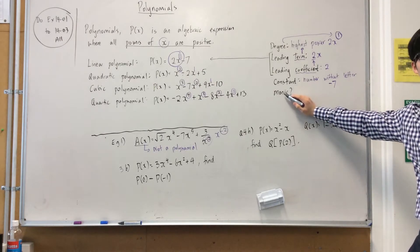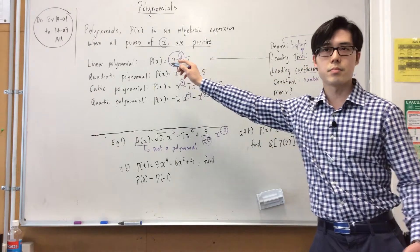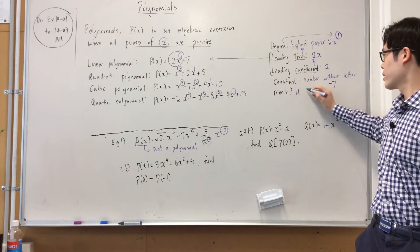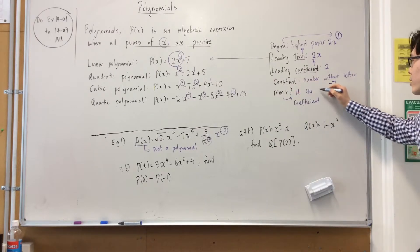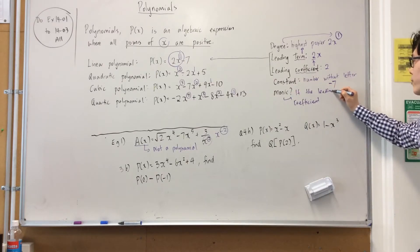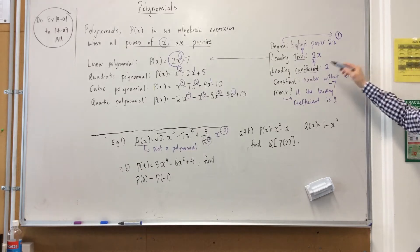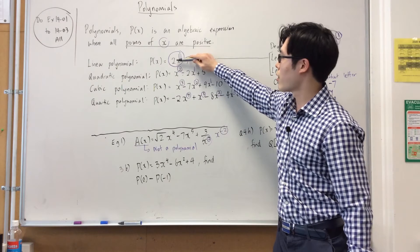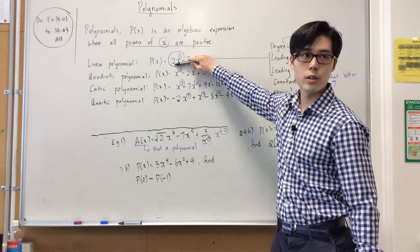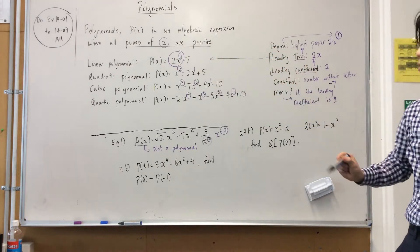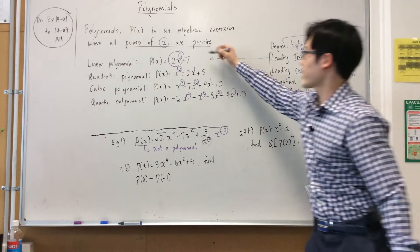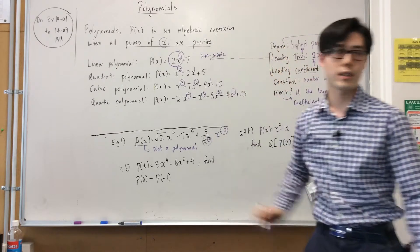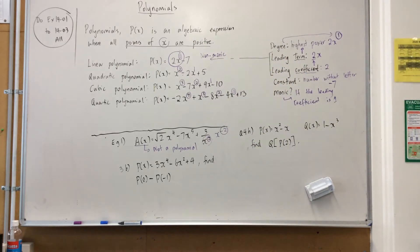Now, monic, girls, a polynomial is monic if the leading coefficient is one. So, in other words, girls, in our leading term, the coefficient is two. So, this is not a monic polynomial. So, in this case, it's actually called what they usually say is non-monic. Lots of terms, it's confusing.